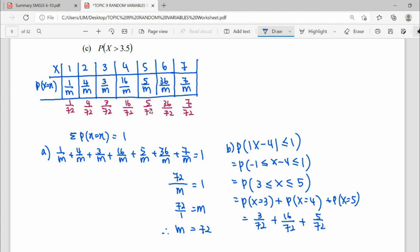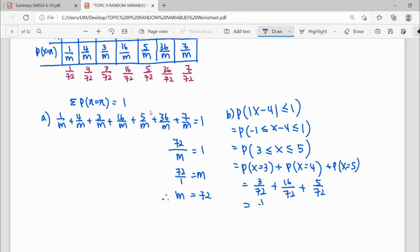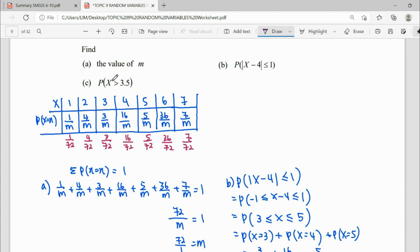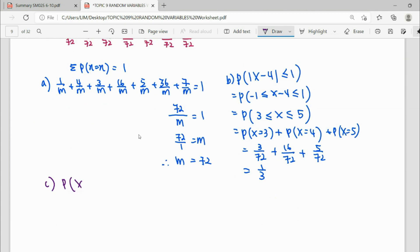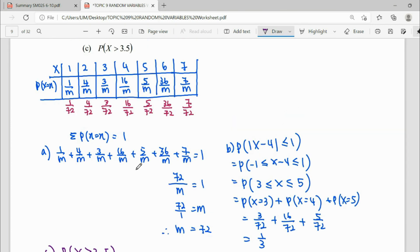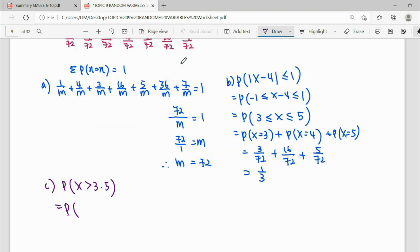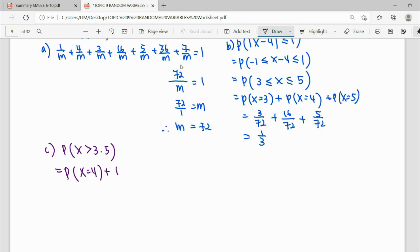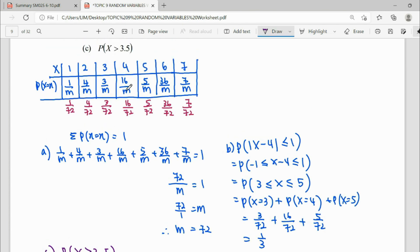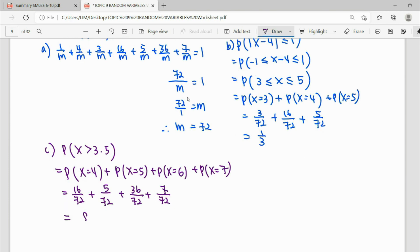So the rest we can press calculator to simplify. Question c here asks for probability x more than 3.5. Probability x more than 3.5, so we pick the random variable here which is more than 3.5. More than 3.5 will be 4, 5, 6, 7. It is equal to random variable 4, x equals to 5, x equals to 6, and x equals to 7. So x equals to 4 here is 16, 5 is 5, 6 is 36, 7 is 7. So simplifying by calculator.